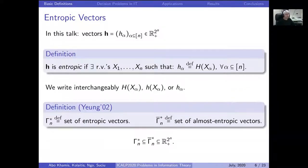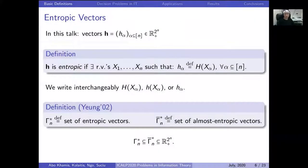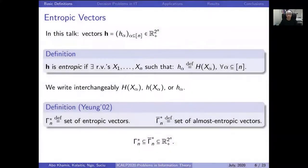Since there are 2^n possible entropic values, we view them as a vector. Conversely, given a vector h with 2^n dimensions, we call it entropic if there exist n random variables such that for each component of the vector, its value is precisely the entropy of those subsets of random variables. For that reason, we will often denote them with lowercase h of a subset of random variables.